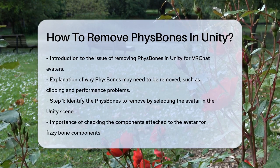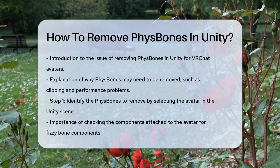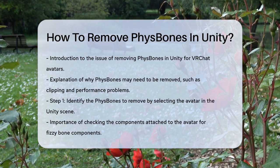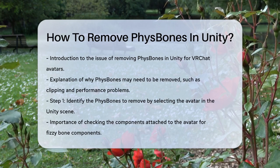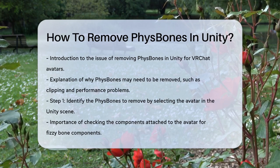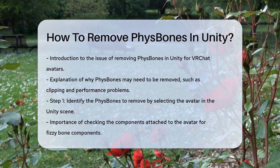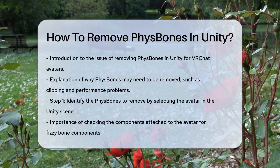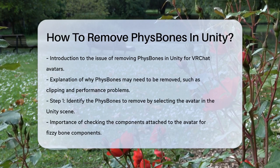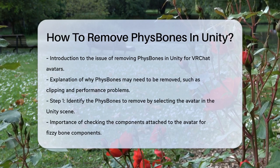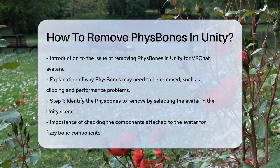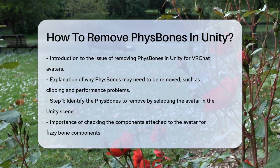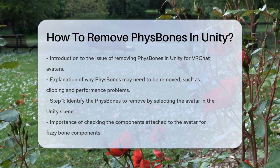To start, you need to identify the fizzy bones you want to remove. You can do this by selecting your avatar in the Unity scene and looking at the components attached to it. If you see a lot of fizzy bone components and you're not sure which ones to remove, you can use a tool to help you out.